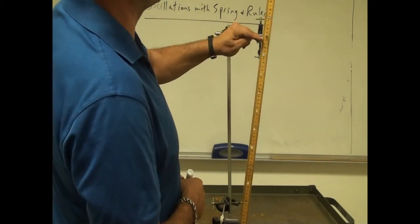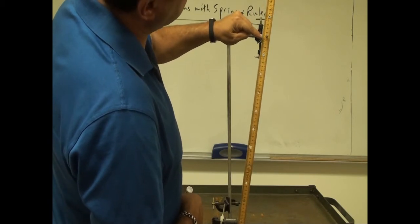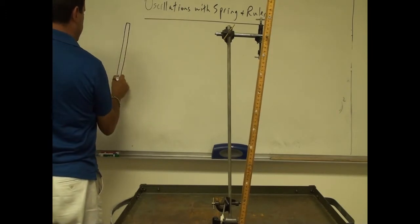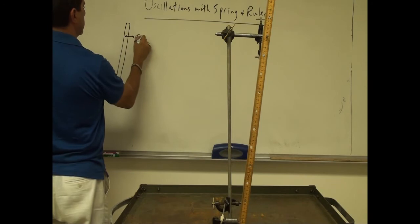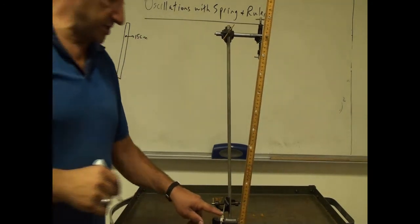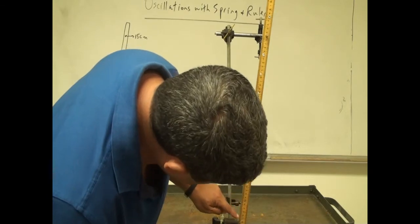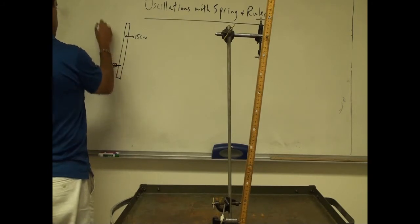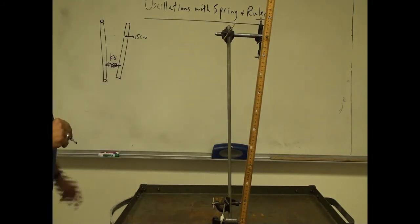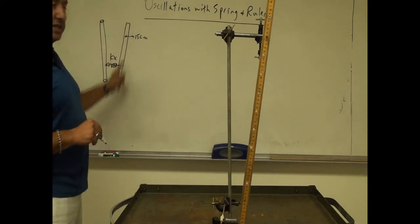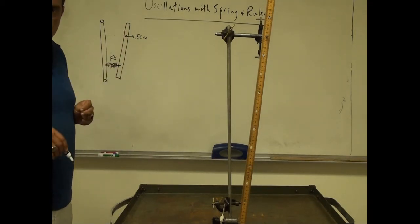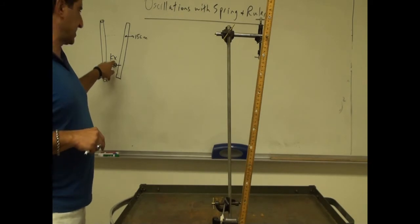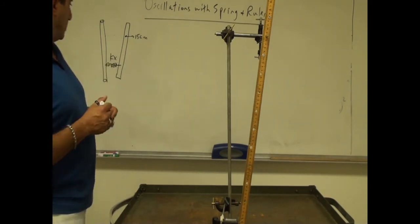Let's write down where the pivot point is — it's at the 15 centimeter mark on this one meter stick. The spring is connected at the 65 centimeter mark. The spring exerts a force Kx by Hooke's Law, and the weight of the ruler also causes a torque. So the ruler goes back and forth due to two torques: the torque due to the spring force Kx, and the torque due to its own weight.